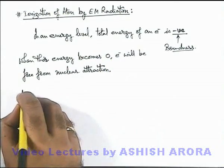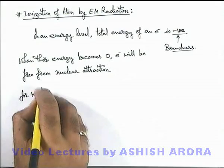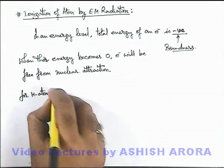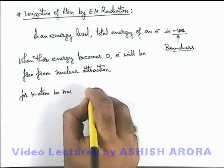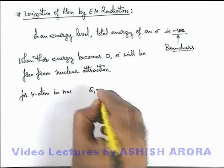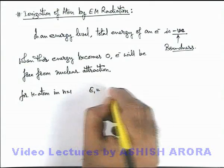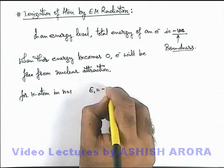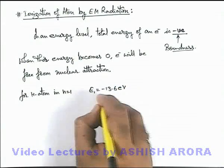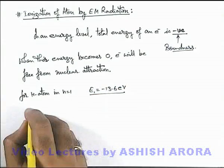Like, if we talk for hydrogen atom, in n equal to 1 there is only one electron, so energy of electron we define, we have already calculated, is minus 13.6 electron volt.